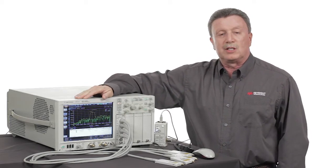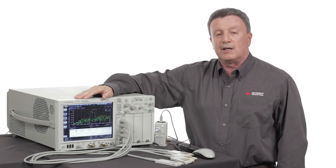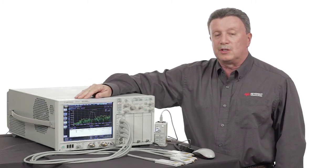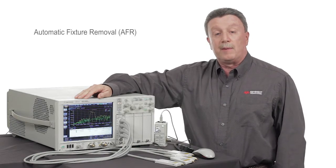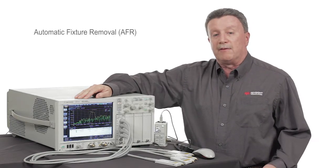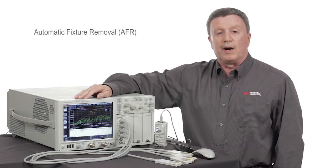The second step is we'll use the calibrated TDR to characterize our fixtures using a new tool available on the TDR called automatic fixture removal or AFR. In this case, one-port AFR.